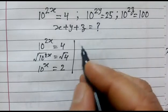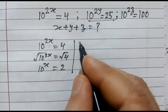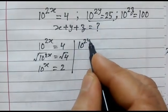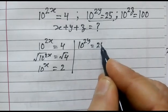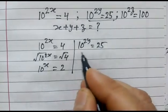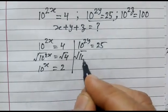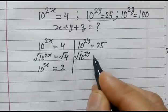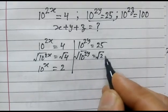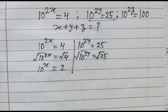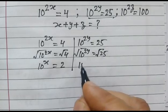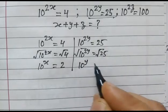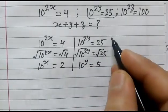Same way, 10 to the power 2y is equal to 25. Taking the square root of both sides: square root of 10 to the power 2y is equal to square root of 25, and 10 to the power y is equal to 5.